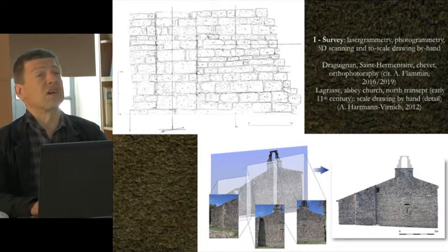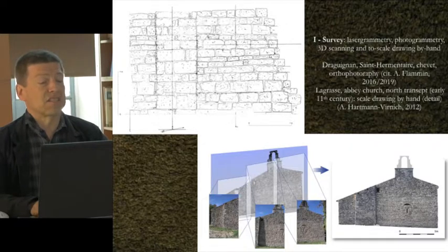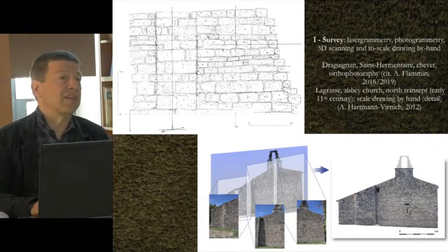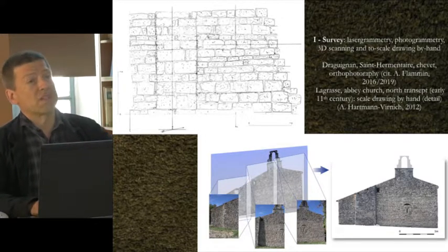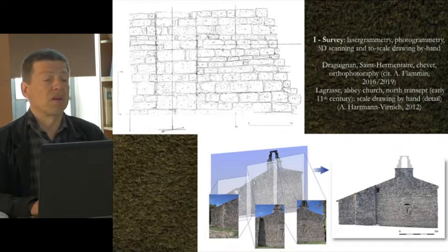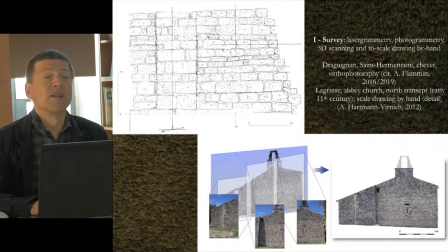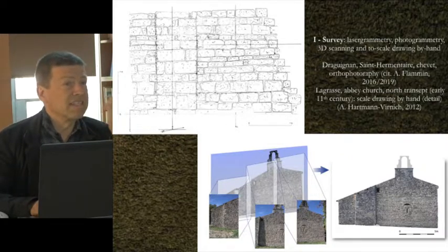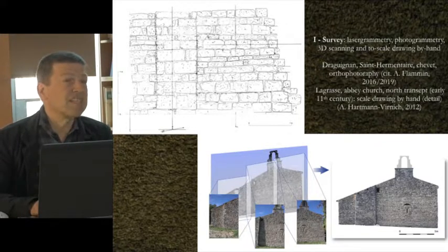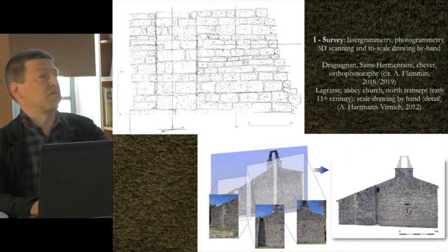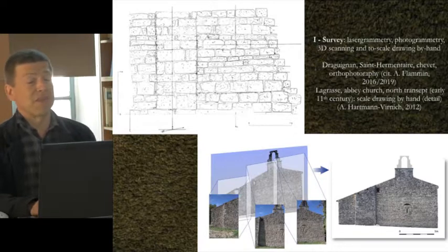The first point I want to start with is survey: documenting the architecture and its spatial reality, and also the canvas for stratigraphical observation regarding the wall, which is our main document. The traditional method is hand-by-hand drawing to scale, which is still the best way to approach in detail the material reality and to describe the analytic approach. That's what I prefer, but it is often today combined with other methods.